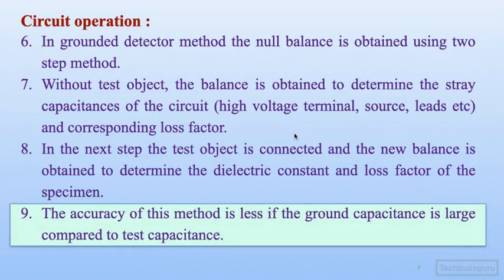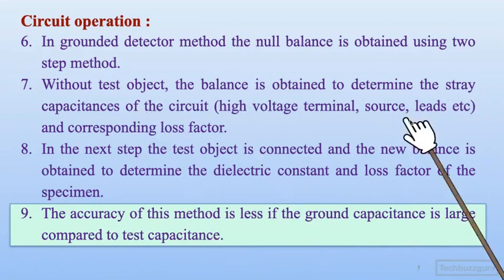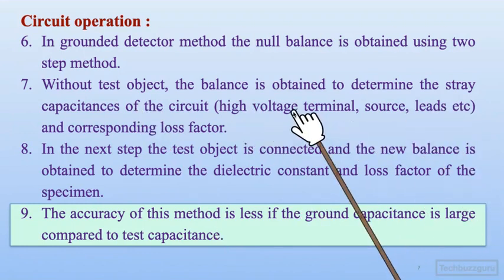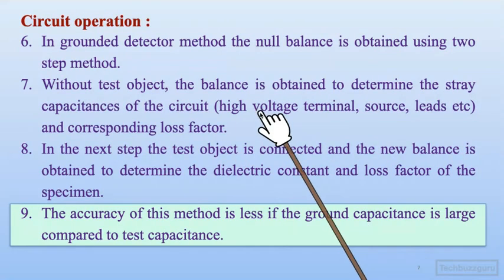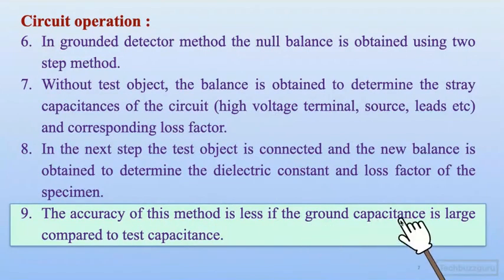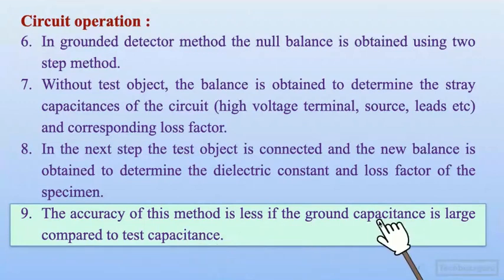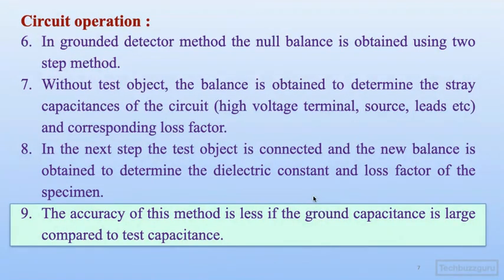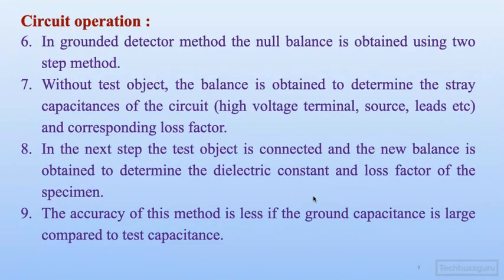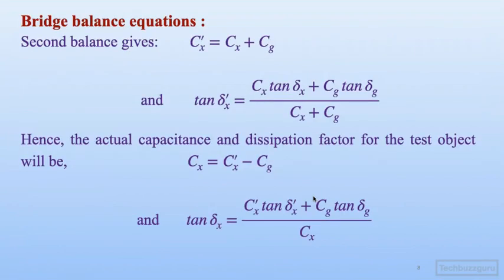The accuracy of this method is limited if the ground capacitance is large compared to the test capacitor. When the ground capacitance is comparable to the test capacitance, the accuracy of the method will be less. Therefore, utmost care has to be taken regarding stray capacitances while carrying out this measurement. The goal is to find Cx and the corresponding loss resistance Rx to determine the loss factor.